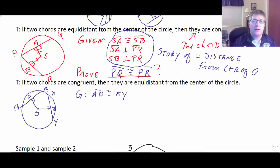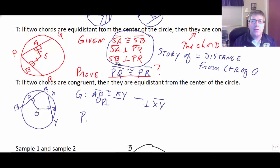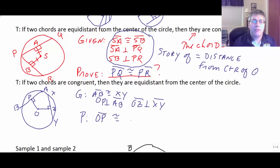We have our two perpendicular segments: OP is perpendicular to AB, and OZ is perpendicular to XY. Now we have perpendicular segments establishing distance. So then we can prove that OP is congruent to OZ — the converse is true. They're equidistant from the center of the circle because the chords were congruent and we have the length of the perpendicular segments.